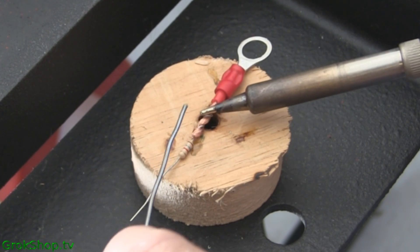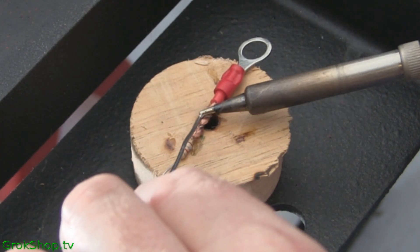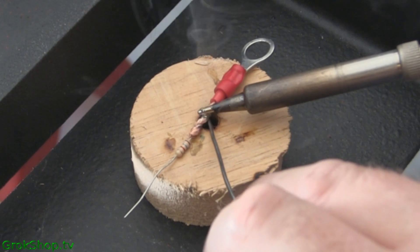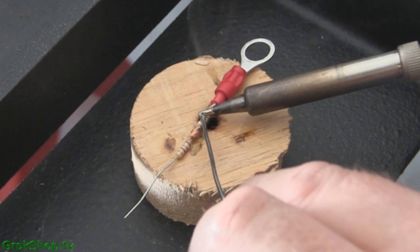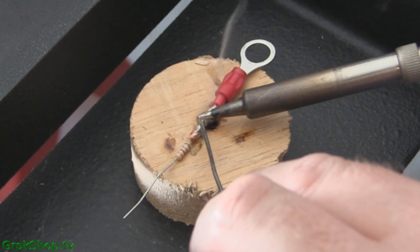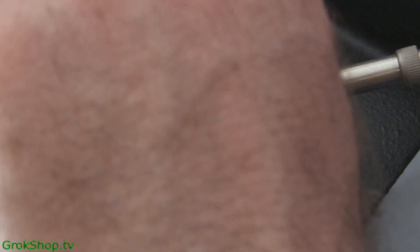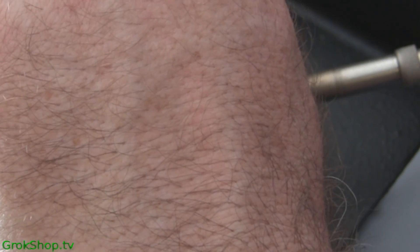When I solder, I like to use a non-conductive surface. Like here I have a piece of wood. Usually use a brick or a piece of tile or something so that you don't lose heat when you're soldering.